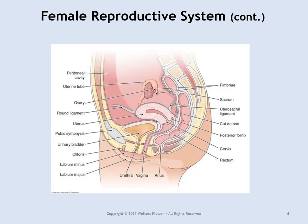The female reproductive system is all suspended within the pelvic cavity. Remember from the urinary system lecture that the orifices for the urinary system, reproductive system, and digestive system are all separate in the female. There is no crossover between the urethra and the vagina — unlike in the male system where the urethra serves both reproductive and urinary functions. In females, those are two completely separate systems.